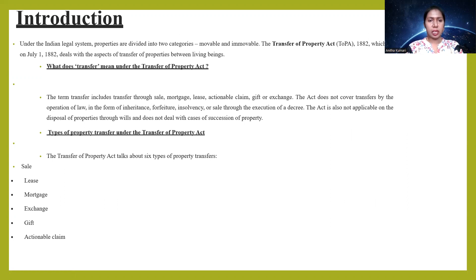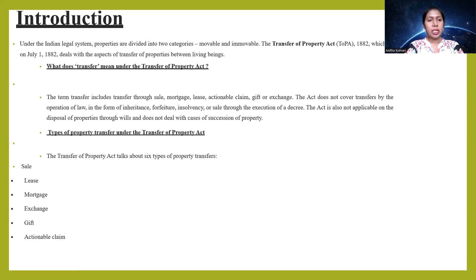Under the Indian legal system, properties are divided into two categories: movable and immovable. The Transfer of Property Act 1872, which came into effect on July 1st, 1882, deals with the aspect of transfer of property between living beings. The term 'transfer' includes transfer through sales, mortgage, lease, actionable claim, gift, or exchange. The Act does not cover transfer by operation of law in the form of inheritance, forfeiture, insolvency, or sales through execution.